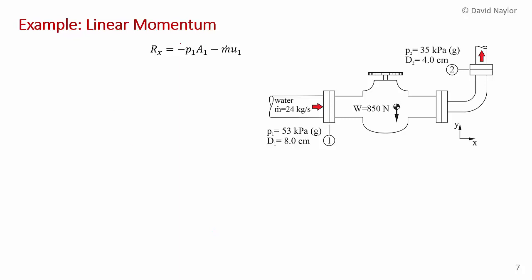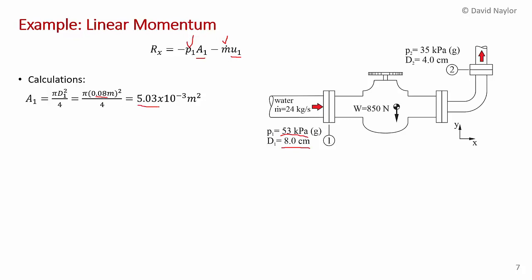Now substitute numbers. P1 = 53 kPa gauge, m-dot = 24 kg/s. The inlet diameter is 8 cm, so A1 = π d1² / 4 = 5.03 × 10⁻³ m². Then using m-dot = ρ A u, we solve for u1 = m-dot / (ρ A1).